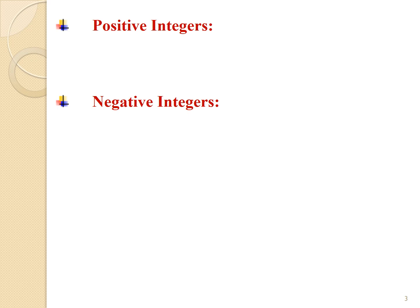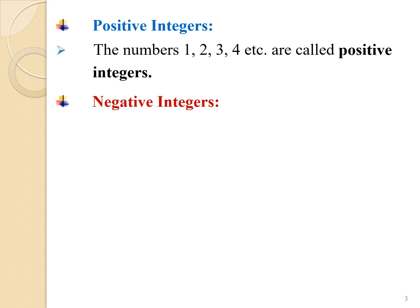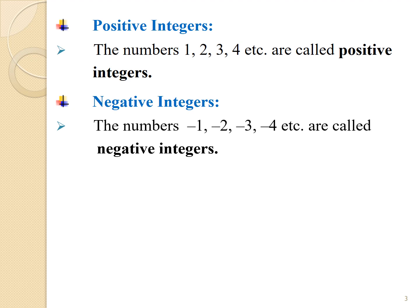Positive integers: the numbers 1, 2, 3, 4, etc. are called positive integers. Negative integers: the numbers minus 1, minus 2, minus 3, minus 4, etc. are called negative integers. The set of integers is denoted using the symbol Z or I.